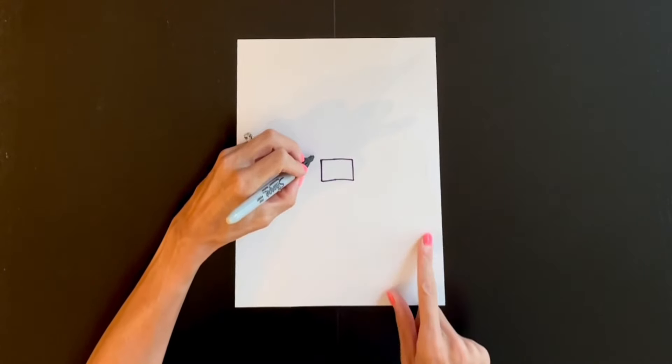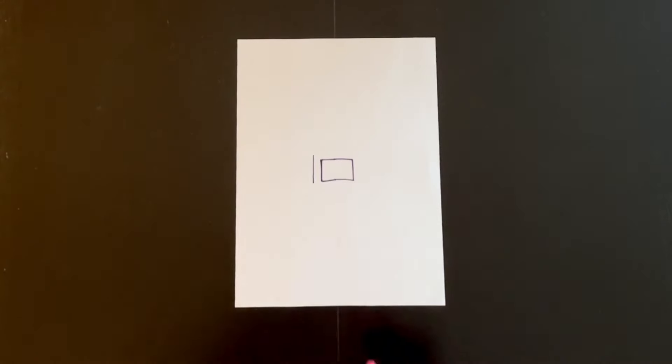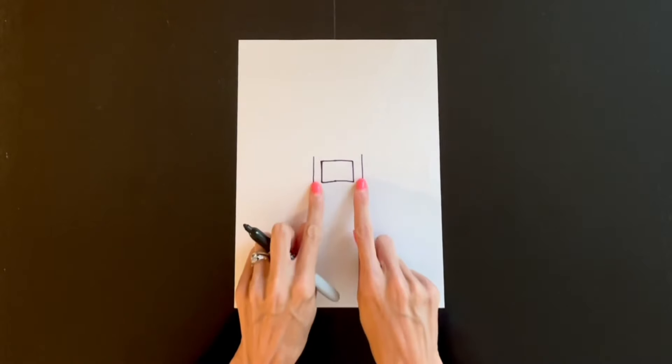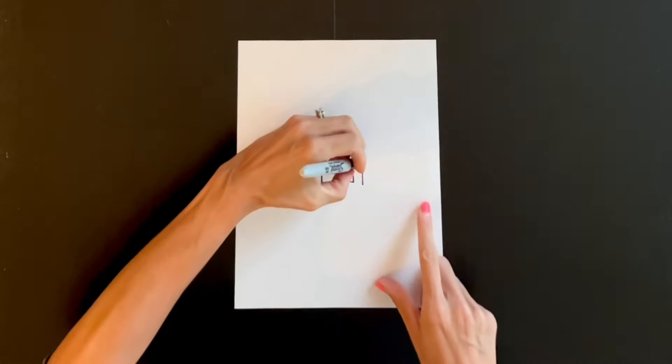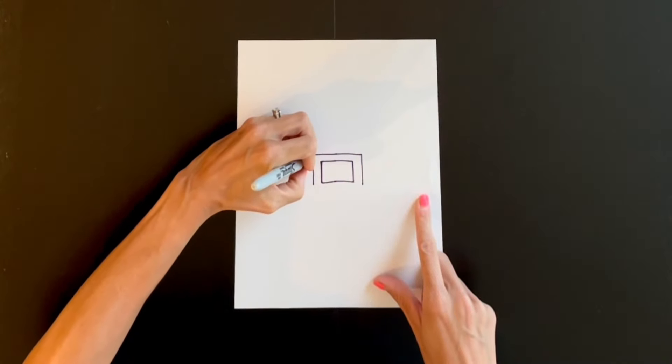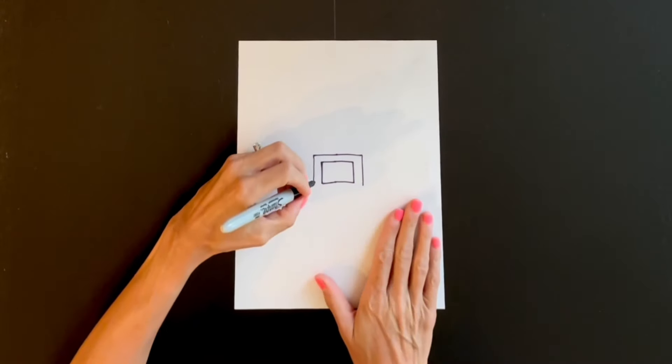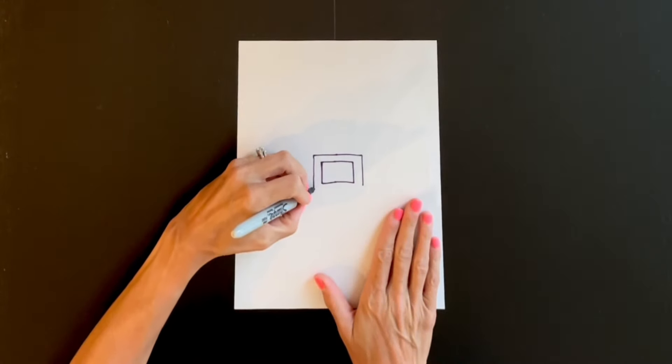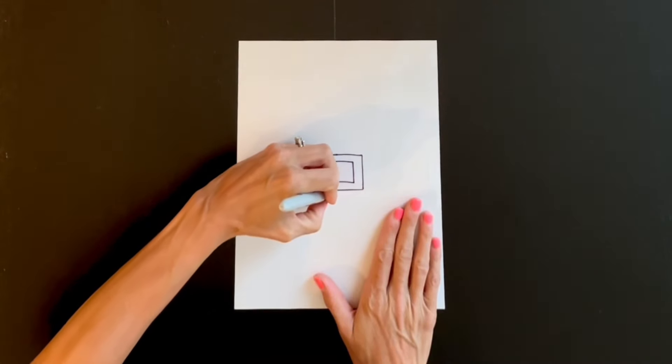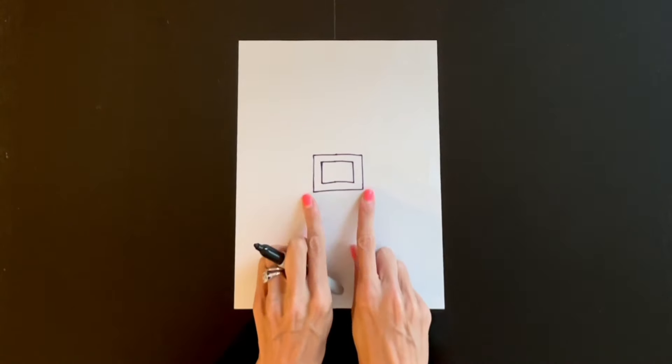Next I'm going to draw another line that's a little bit taller on each side about the same distance apart, and I'm going to draw a line connecting on the top. I'm going to go ahead and extend those sides down and draw a line across the bottom, so now we have a square inside of a square.